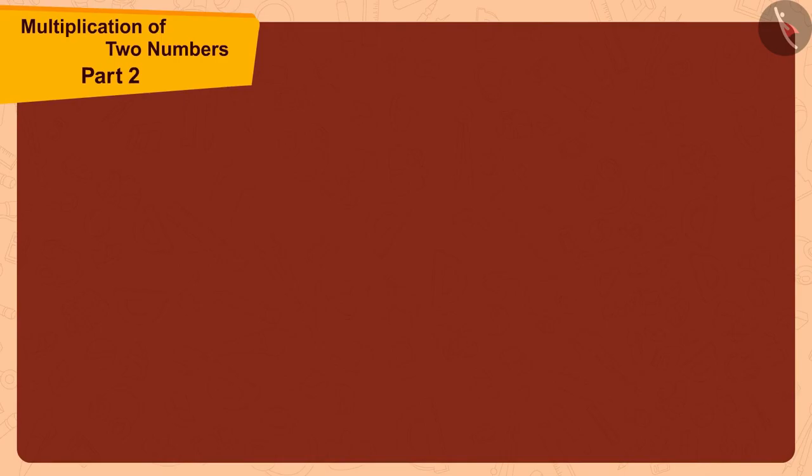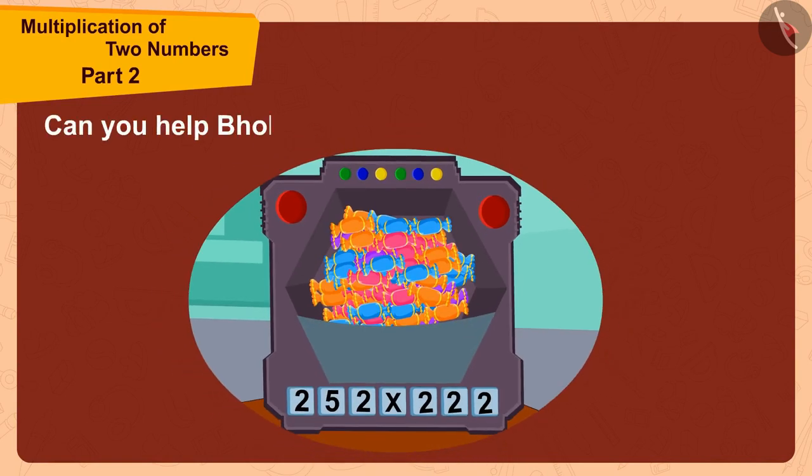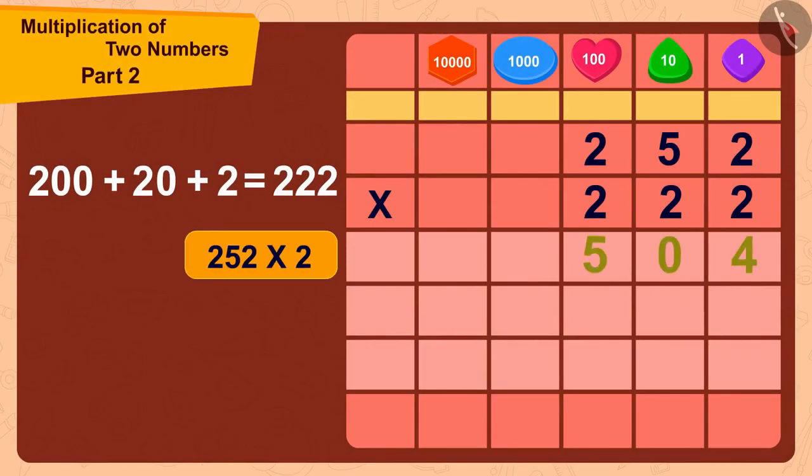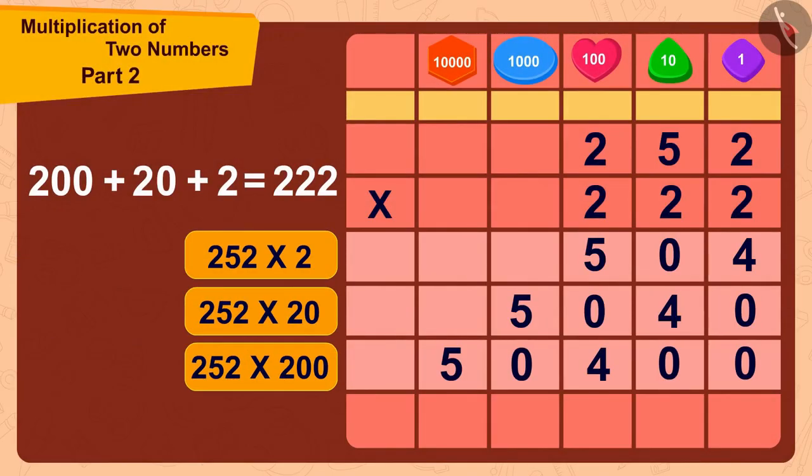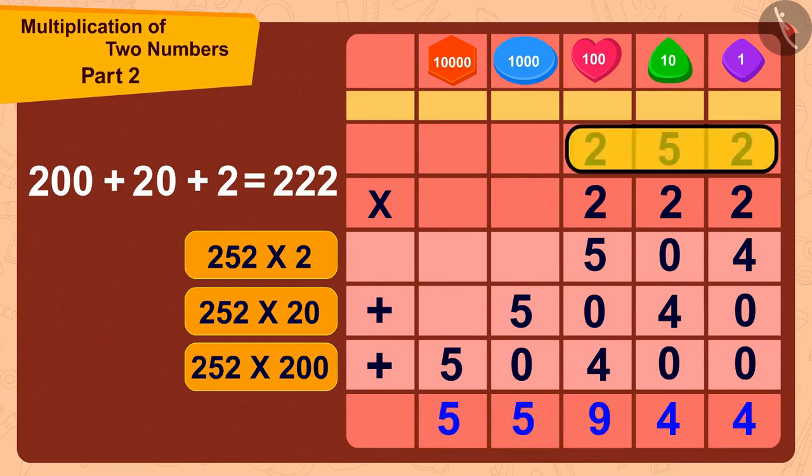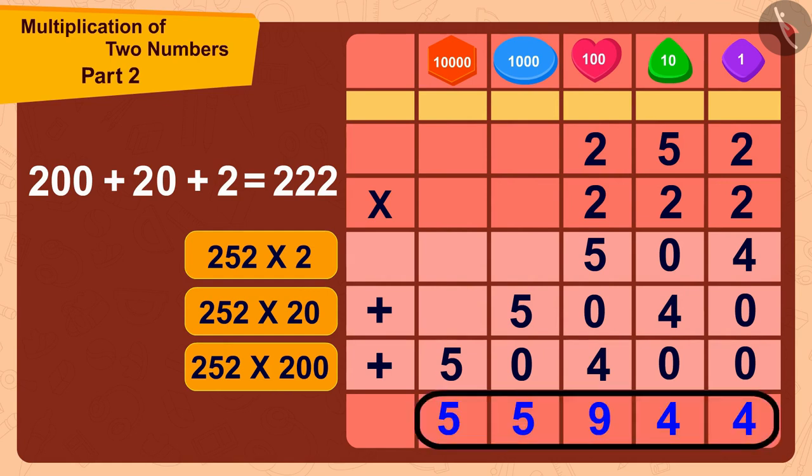Children, can you help Bholla find the answer to this multiplication? If you want, you can stop the video and find the answer. We can find the answer to this multiplication in this way. Well done children, your answer is absolutely correct. Bholla now has 252 times 222, or 55,944 toffees.